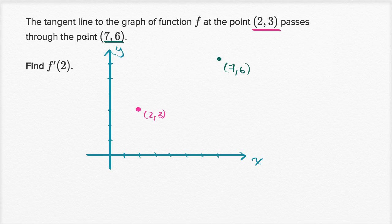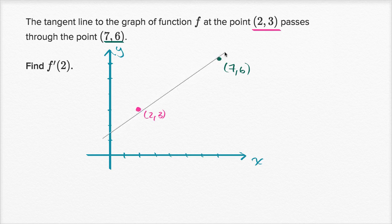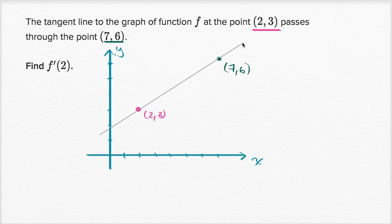Now let's remind ourselves what they're saying. The tangent line to the graph of function f at this point passes through the point seven comma six. So if it's the tangent line to the graph at that point, it must go through two comma three — that's the only place where it intersects our graph — and it also goes through seven comma six. You only need two points to define a line, so the tangent line is going to look like that. It's tangent to f right at two comma three and goes through the point seven comma six.